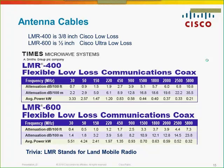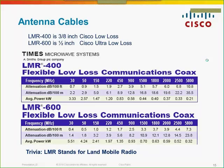Looking at loss in dB: the lower the frequency, the less loss per 100 feet of cable. At 30 MHz you only have about 0.7 dB per 100 feet. At 2.4 GHz you get around 6.7 dB of loss per 100 feet on LMR 400. Using larger LMR 600 cable drops that to about 4.1 to 4.3 dB per 100 feet. If you have to run a long cable, you lose significant performance. The best antenna is one right next to the AP — always keep cable lengths as short as possible.